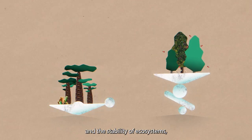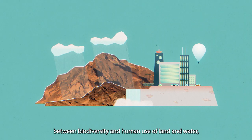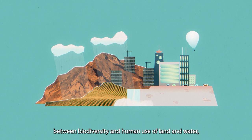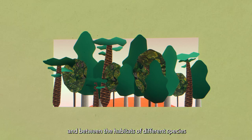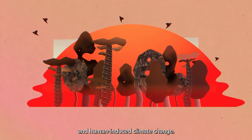This includes the relationships between biodiversity and the stability of ecosystems, between biodiversity and human use of land and water, and between the habitats of different species and human-induced climate change.